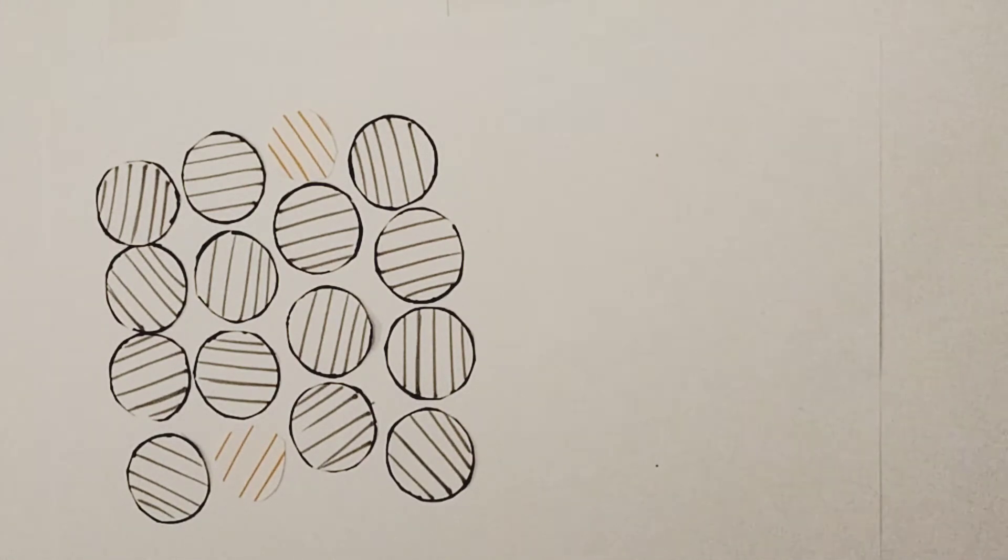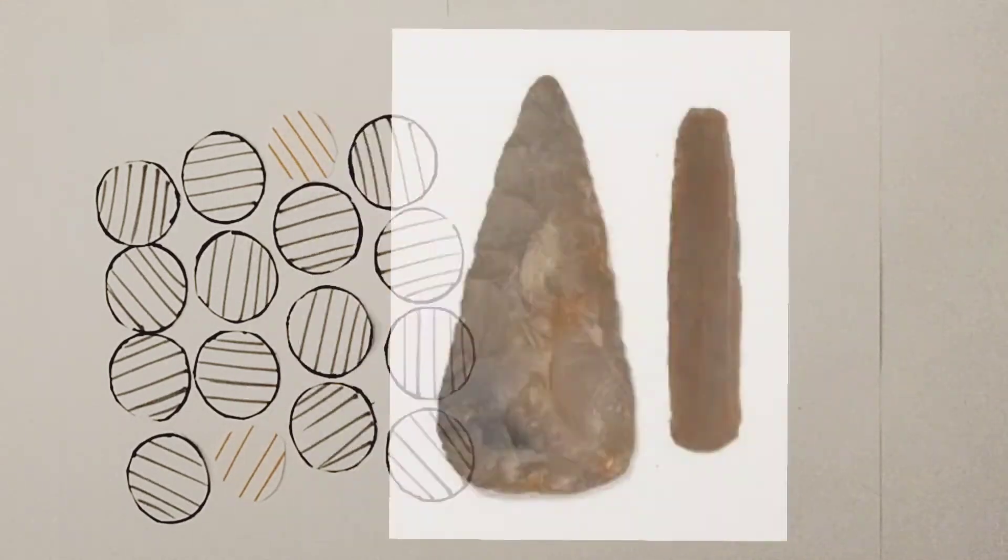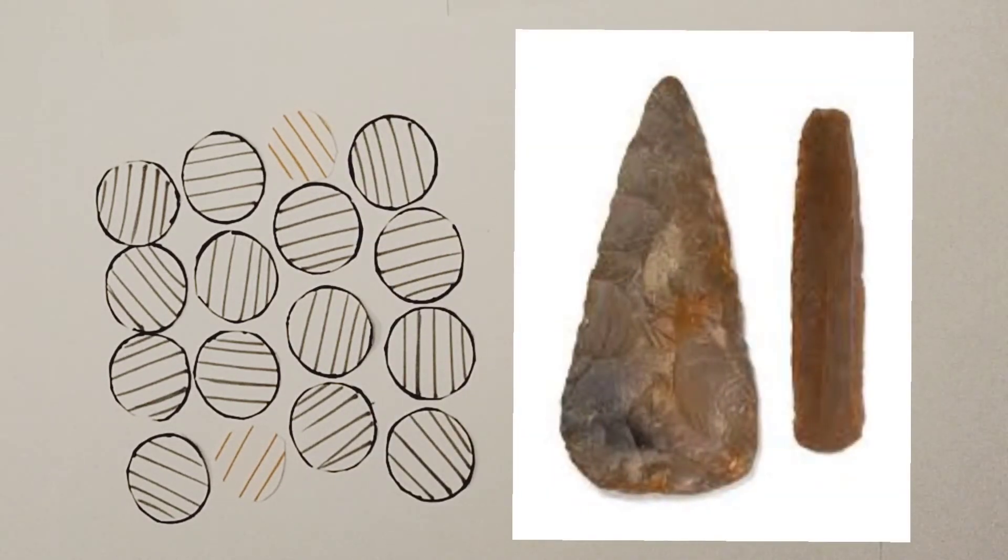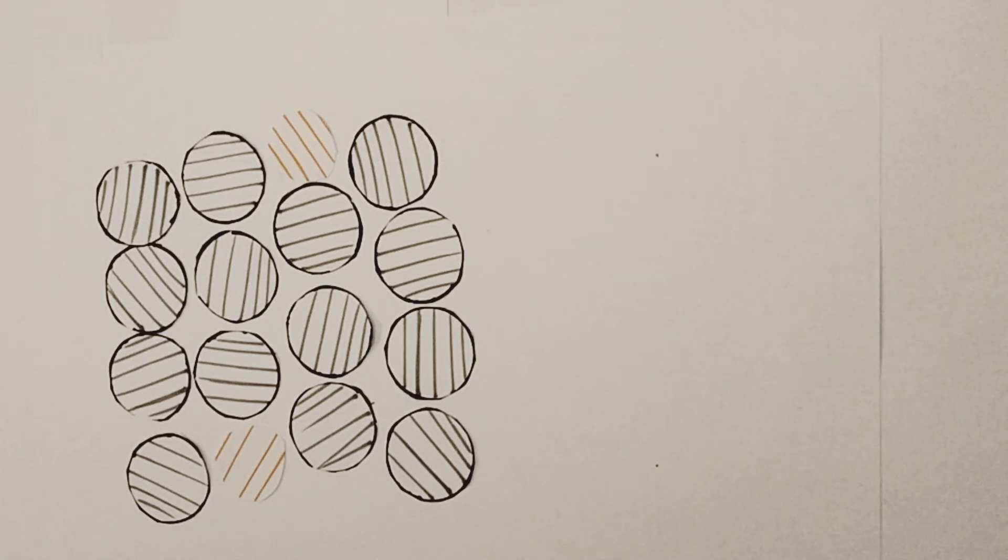Before the Bronze Age, which began approximately 3300 BC, humans were using stone and flint tools. They can be made to be very sharp, but they flake and break easily.